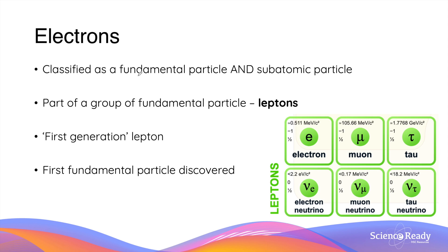Electrons are classified as both fundamental particles and subatomic particles. They are fundamental because they cannot be broken down further, and subatomic because they are found in an atom. Electrons are part of a group of fermions called leptons — specifically a first-generation lepton, and the first fundamental particle discovered by Thomson and further characterized by other scientists.